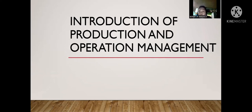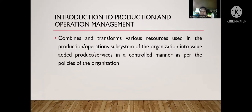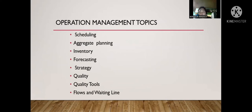We have here production management and operation management. Production management consists of various people — they are the ones who provide the raw materials, or in short, they are the manufacturers. Operation management also consists of various people who help to provide service or give life to the product. Production and operation management combines and transforms various resources used in the production and operation subsystem of the organization into value-added products in a controlled manner as per the policies of the organization.